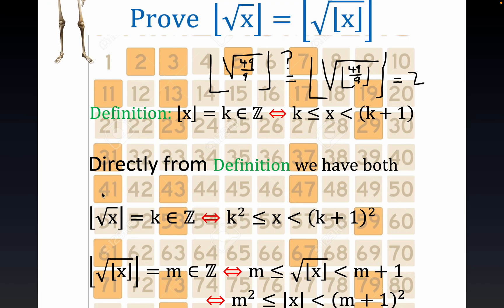This really means that the integer k would be less than or equal to the square root of x, strictly less than k plus 1. Now the square root function is definitely monotonically increasing.